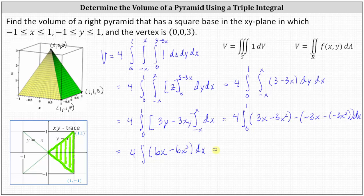Now we integrate with respect to x. Integrating 6x with respect to x gives 6 times x² divided by 2, which simplifies to 3x². Then minus 6 times x³ divided by 3, which simplifies to minus 2x³.